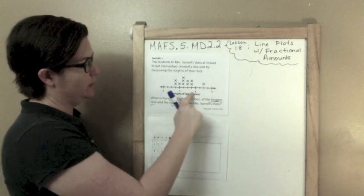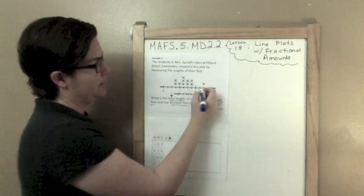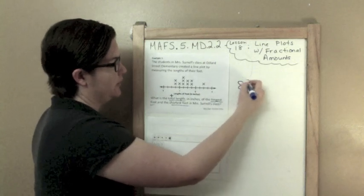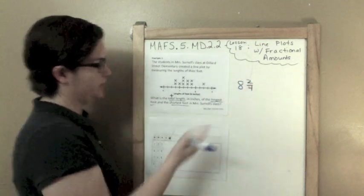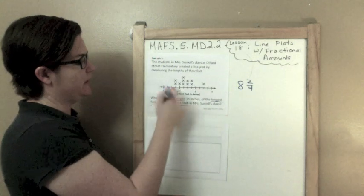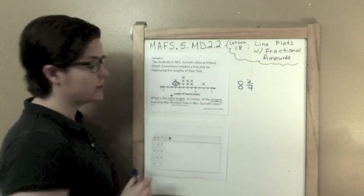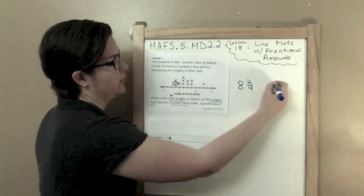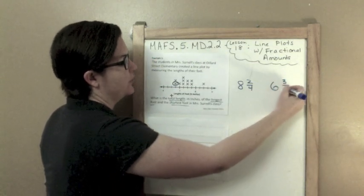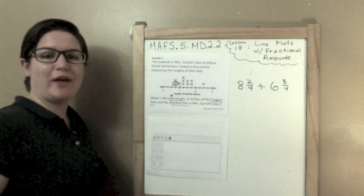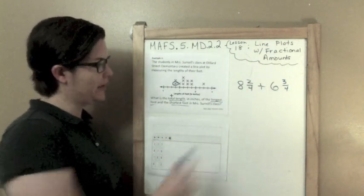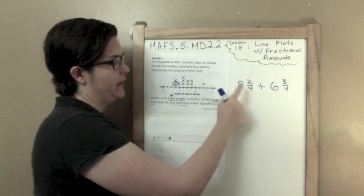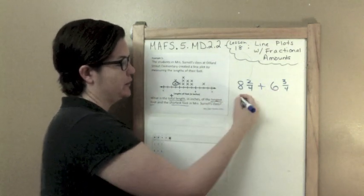We've got the longest foot and the shortest foot. So the longest foot would be 8 and 2 fourths inches, and the shortest foot would be 6 and 3 fourths. Since we are finding the total amount, we will add them. Our denominators are the same, so we can just start adding. Let's do our whole numbers: 8 plus 6 equals 14.